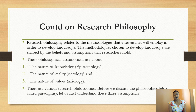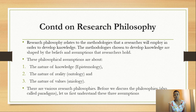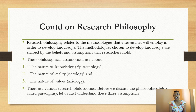What are these assumptions and beliefs about? The philosophical assumptions are about three things: the nature of knowledge, which we call epistemology; the nature of reality, which we call ontology; and the nature of values, which we call axiology. Out of those assumptions, we have various research philosophies, also called paradigms. But before we discuss the philosophies, let us first understand the meaning of these assumptions.